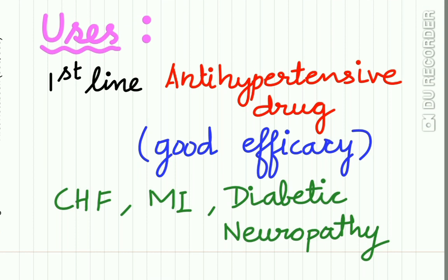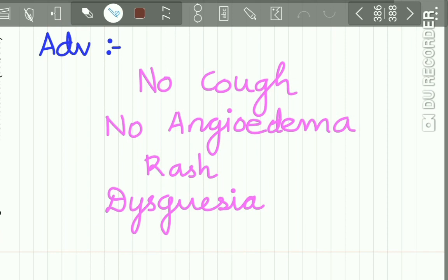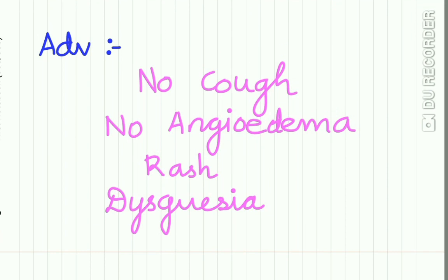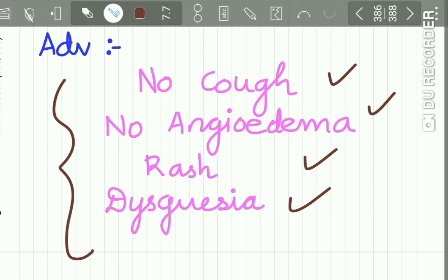Uses of losartan: it is a first-line antihypertensive drug due to good efficacy. It can be used for CHF, MI, and diabetic nephropathy. The advantage is that ACE inhibitors cause cough, angioedema, rash, and dysgeusia—there are no such side effects with losartan or AT1 receptor antagonists.